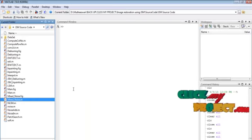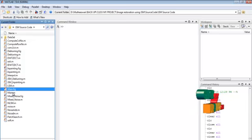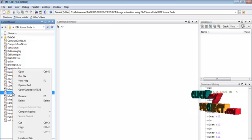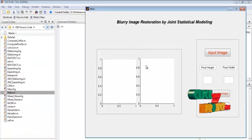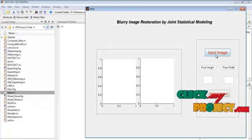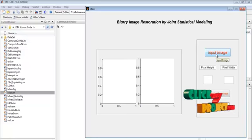Let me discuss the running procedure for our process. Select the main.m file in the current folder. Right click that file and run for executing this process. This is the main window for the deep learning process for the JSM. And this is the input image button. You can browse the input image from the dataset folder.